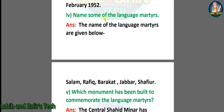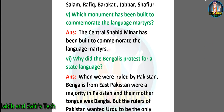Number four: name some of the language martyrs. Answer: The names of the language martyrs are Salam, Rafiq, Barkat, Jabbar, and Shafiu. Number five: which monument has been built to commemorate the language martyrs? Answer: The Central Shaheed Minar has been built to commemorate the language martyrs.